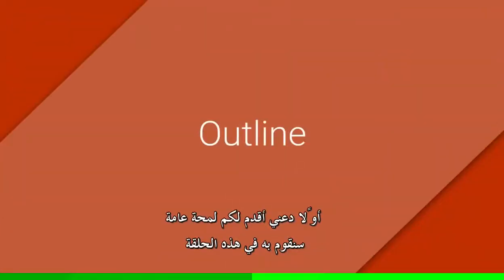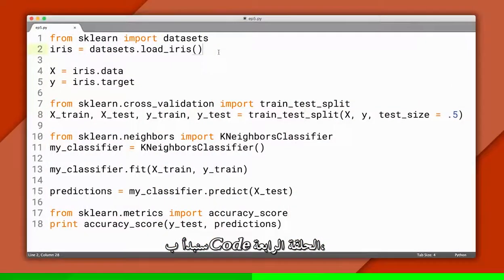First, here's a quick outline of what we'll do in this episode. We'll start with our code from episode four, let's write a pipeline.